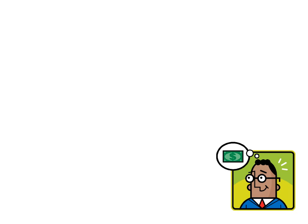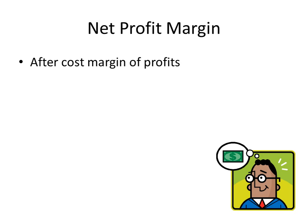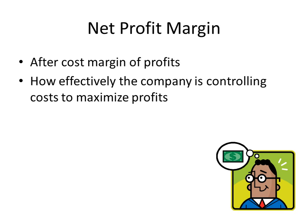There are several things that we should know when we're using the net profit margin ratio. The first is that this is an after-cost margin of profits. So we're essentially taking the gross profits and subtracting out the expenses, the interest, and the taxes. The next thing we need to note is that this is a measure of how effectively the company is controlling costs in order to maximize profits.